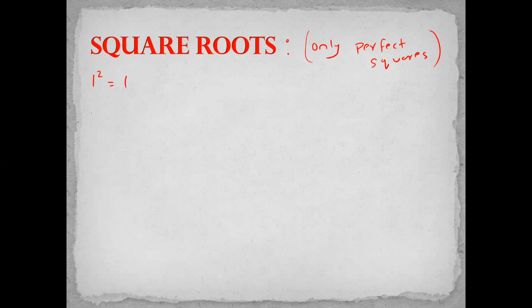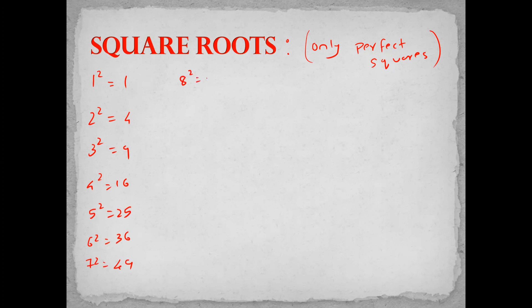I'll write it down for you: 2²=4, 3²=9, 4²=16, 5²=25, 6²=36, 7²=49, 8²=64, 9²=81, 10²=100.